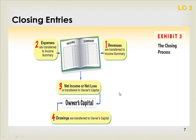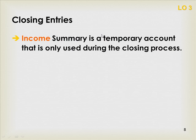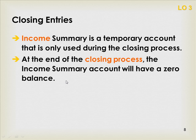Four closing entries: revenues, expenses, income summary, drawing. Capital does not close — we are not closing capital in any of these entries. Income summary is considered a temporary account because it's only used during the closing process; you will not use this account any other time of the year. At the end of the closing process, income summary will also have a zero balance — if income summary has anything left in it in the ledger, you have done something incorrect.